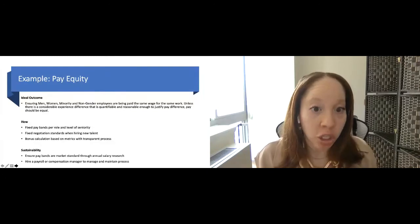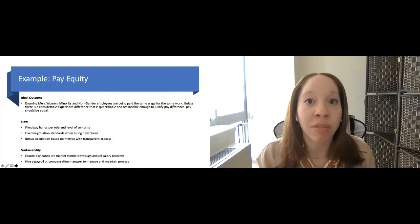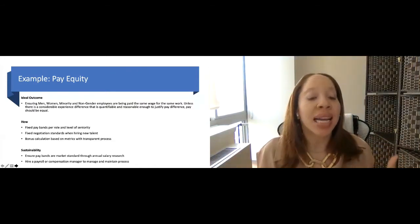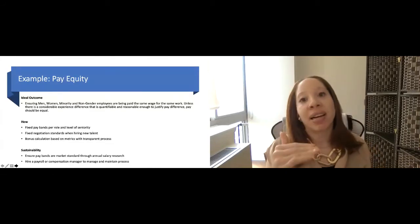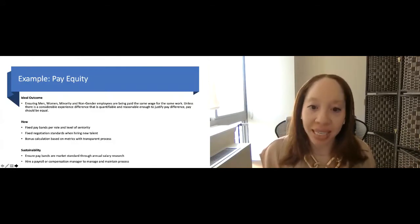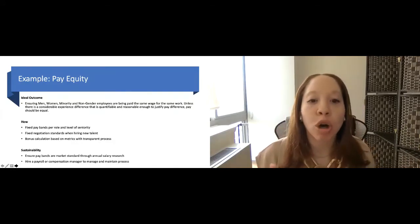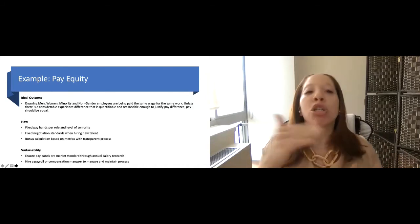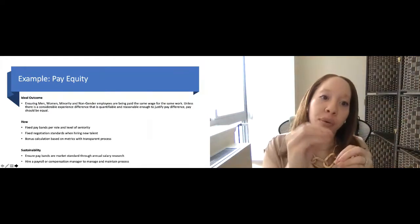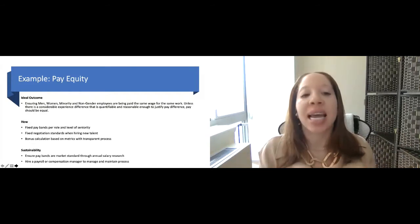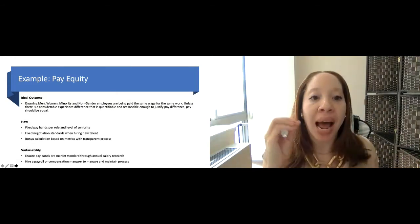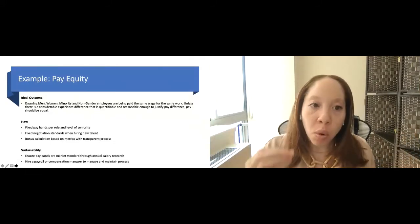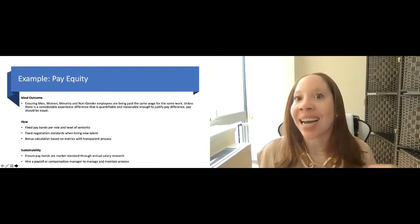Let's have fixed negotiation standards when we're hiring new talent. We won't negotiate over X percentage based on the initial offer, point blank period. Bonus calculations based on metrics with a transparent process to ensure that if we ever get pushed on why somebody's bonus is higher than somebody else, we have a very clear outline of what that is. And when we look at sustainability, let's ensure our pay bands are market standard through our annual salary review process, and let's hire a payroll or compensation manager to manage and maintain the process itself as well, so that we're creating that transparency and that arm length transaction. So you can see here how based on the ideal outcome, we're starting to create goals and a plan of how we're going to achieve that overarching objective. Now, the steps that go into creating the pay bands, having negotiation standards, creating bonus calculations, there's definitely lots of steps in between there as well that require a lot of different stakeholders. But it's important that we start to identify the how so we can break that down and start to create more tactical, task-oriented items.